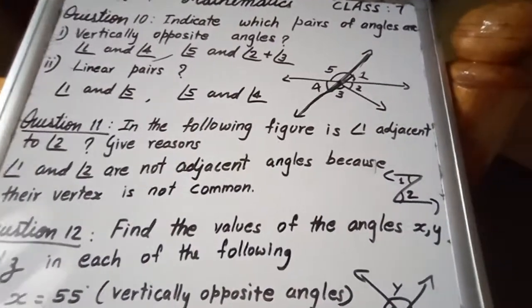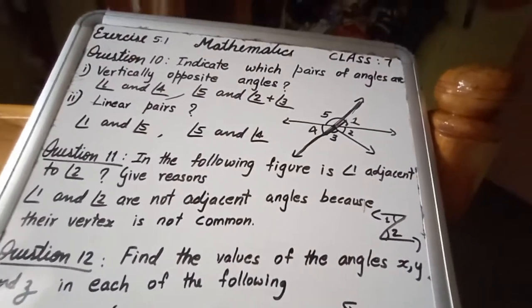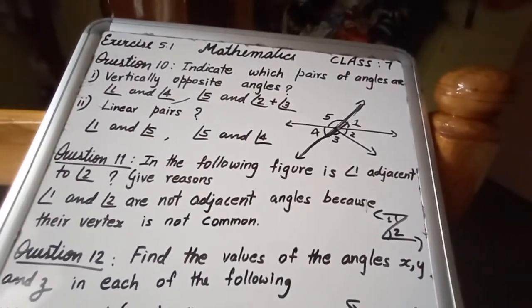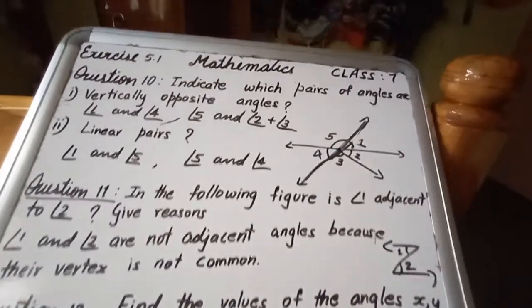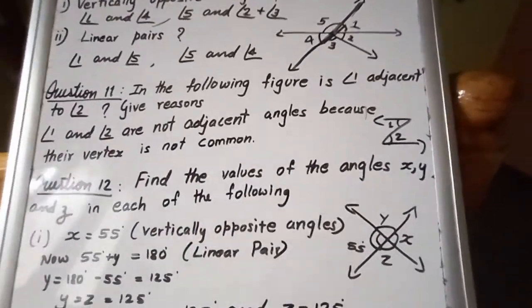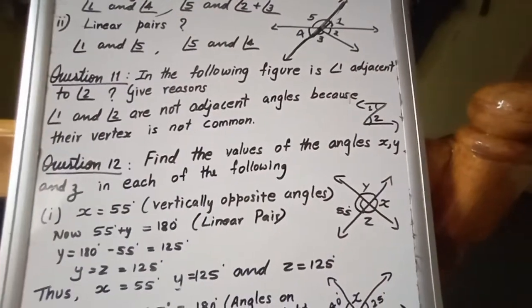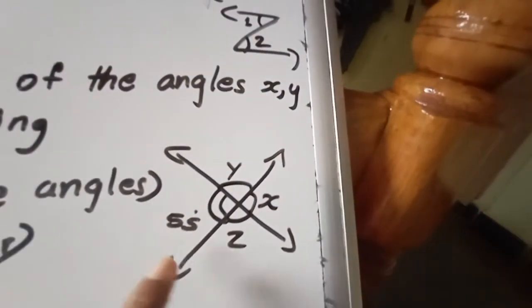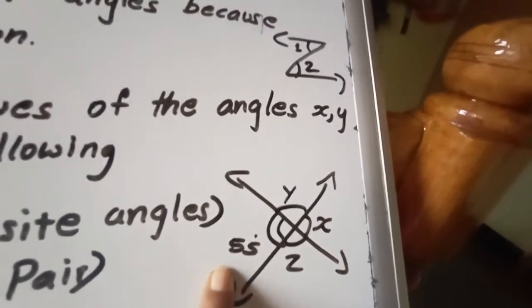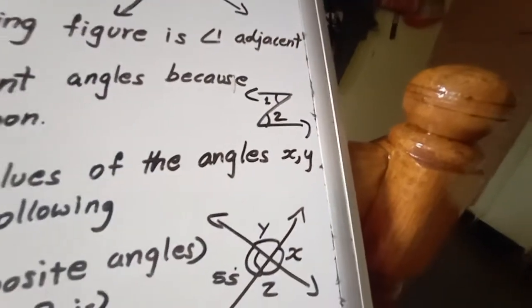Now let us go to question number 12. Find the values of the angles X, Y, Z in each of the following. Here there are two sub questions. So we can find out. First one, in the given figure, this is the first figure. They are given 55 degree.